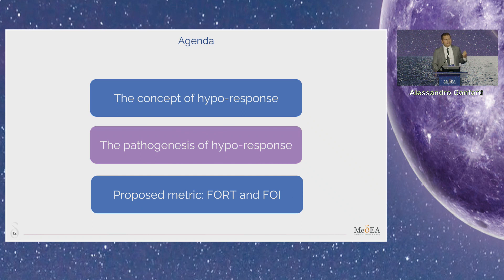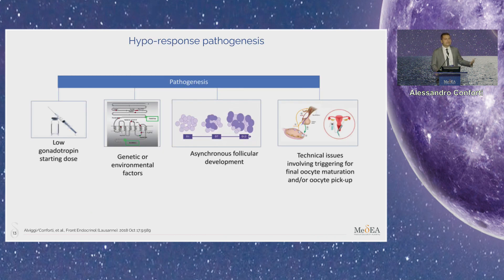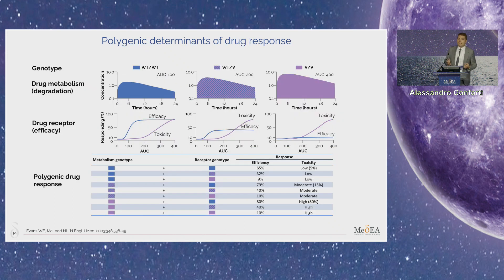Taking into account the concept of ovarian response — the capability to exploit all the potential of female fertility — we are now exploring the pathogenesis of ovarian response that could be different. It could be related to efficient gonadotropic starting doses, triggering involved with final oocyte maturation, or oocyte pickup. But there are some genetic and environmental factors that are very interesting to investigate.